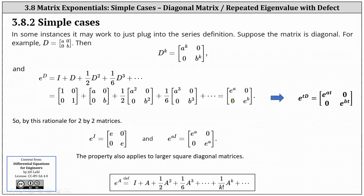The other two entries remain zero. So now we have e to the power of D equal to the two by two matrix with entries e to the a, zero, zero, and e to the b. From here, it follows that the matrix exponential e to the power of tD has entries e to the power of at, zero, zero, and e to the power of bt. Notice how determining a matrix exponential for a diagonal matrix is very straightforward.